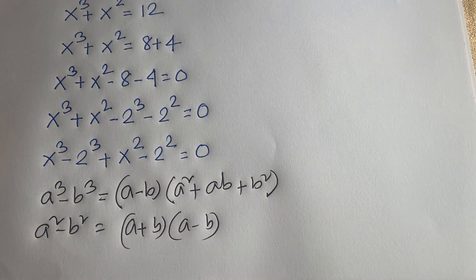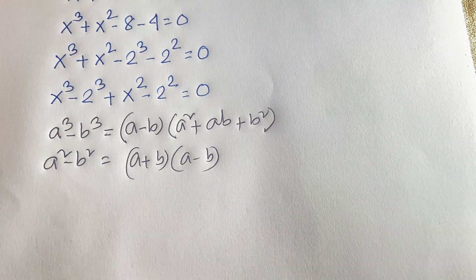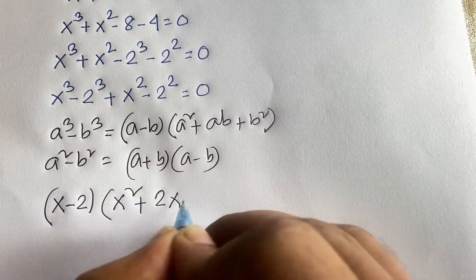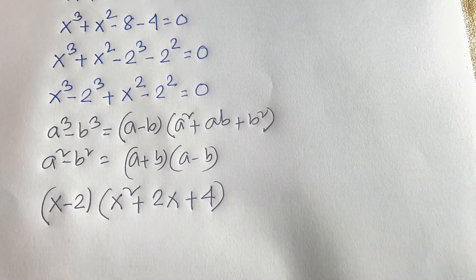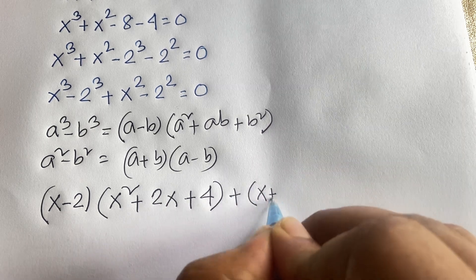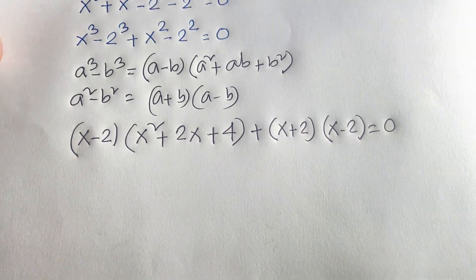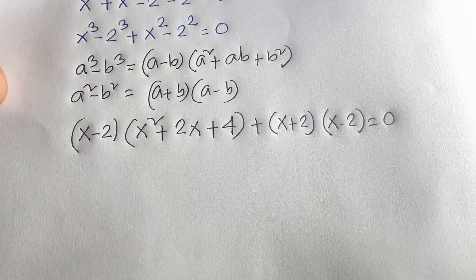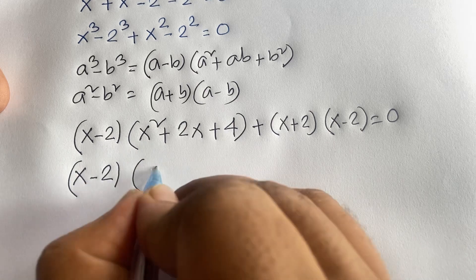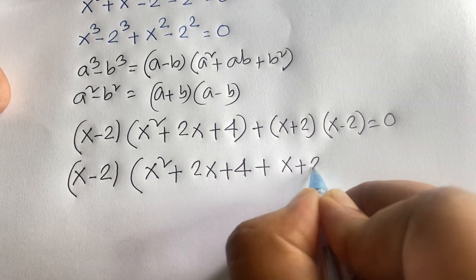Applying these identities: x cubed minus 2 cubed becomes x minus 2 times x squared plus 2x plus 4. And x squared minus 2 squared becomes x plus 2 times x minus 2, all equal to 0.